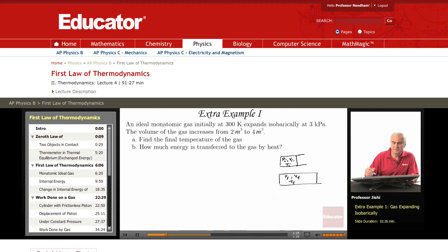Let's write what we know. The initial pressure is 3 kilopascal, so PI is 3 times 10 to the 3 Pascal. The initial volume VI is 2 meters cubed, and the initial temperature TI is 300 degrees Kelvin.